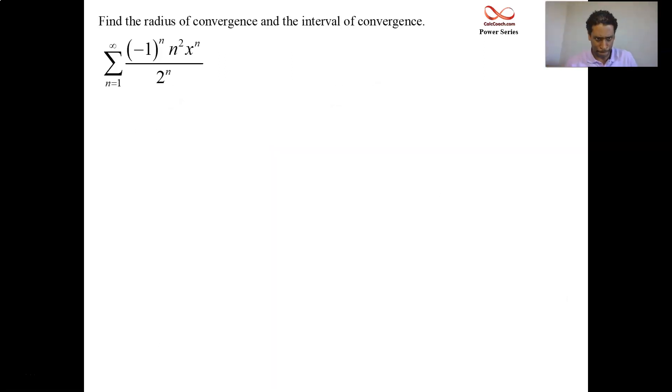Our series is going to be negative one to the n, n squared, x to the n, 2 to the n. We're not concerned about what function this represents. We're concerned about what x values make this converge. There's two things that come out of that, the interval of convergence and the radius of convergence. We're going to use the ratio test.